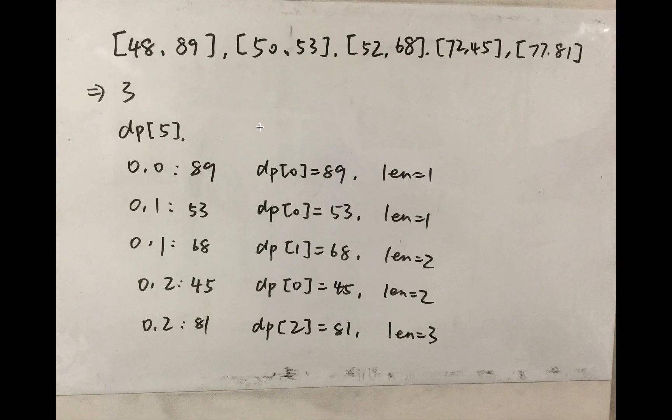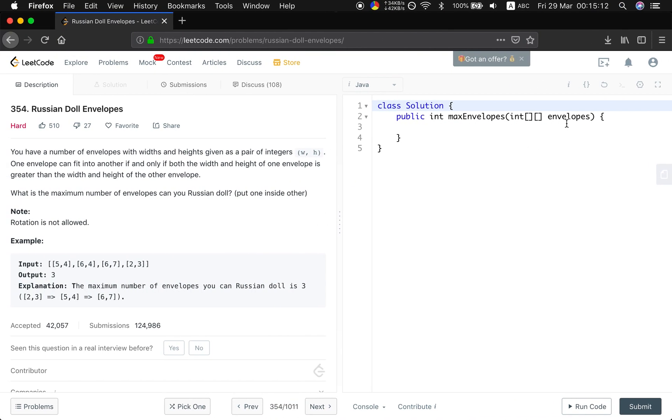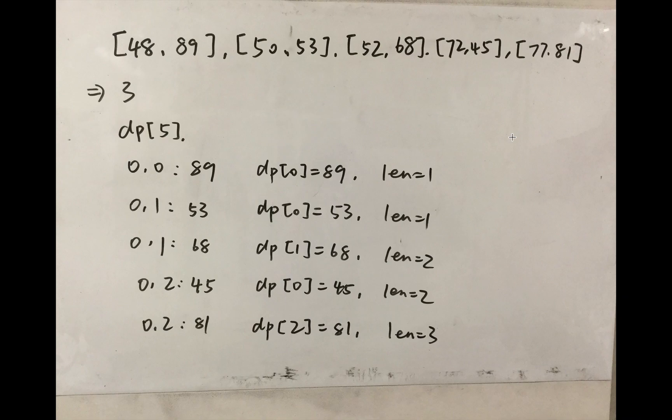And then we can choose the last envelope. So it's three. So you have an intuition that if we are given envelopes, we should sort them at first. We should sort them by their width ascendingly, which means from the smaller element to the greater element. How about the height, the second element?